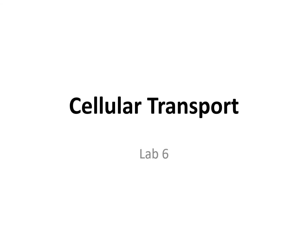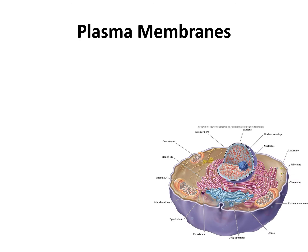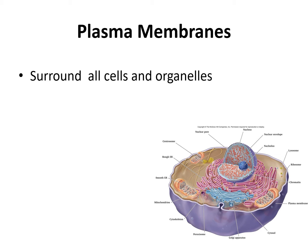This is the lecture for lab six on cellular transport. If you remember from the previous lab, all cells must have a plasma membrane. The plasma membrane is the structure that surrounds the outside of all cells and also the organelles. The purpose of the plasma membrane is to serve as a barrier to separate the environment from the inside of the cell.